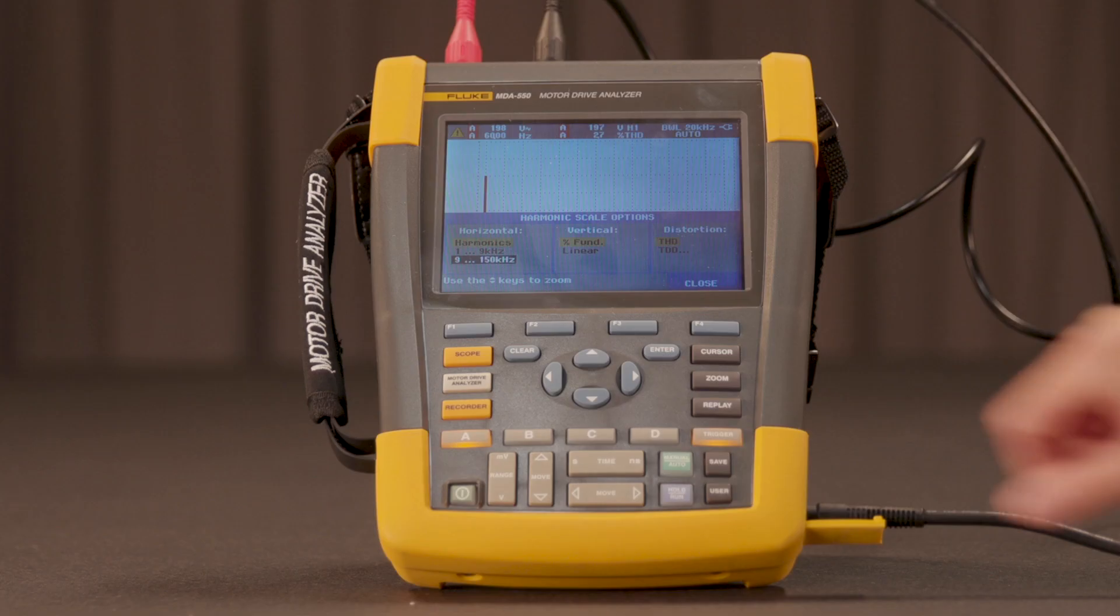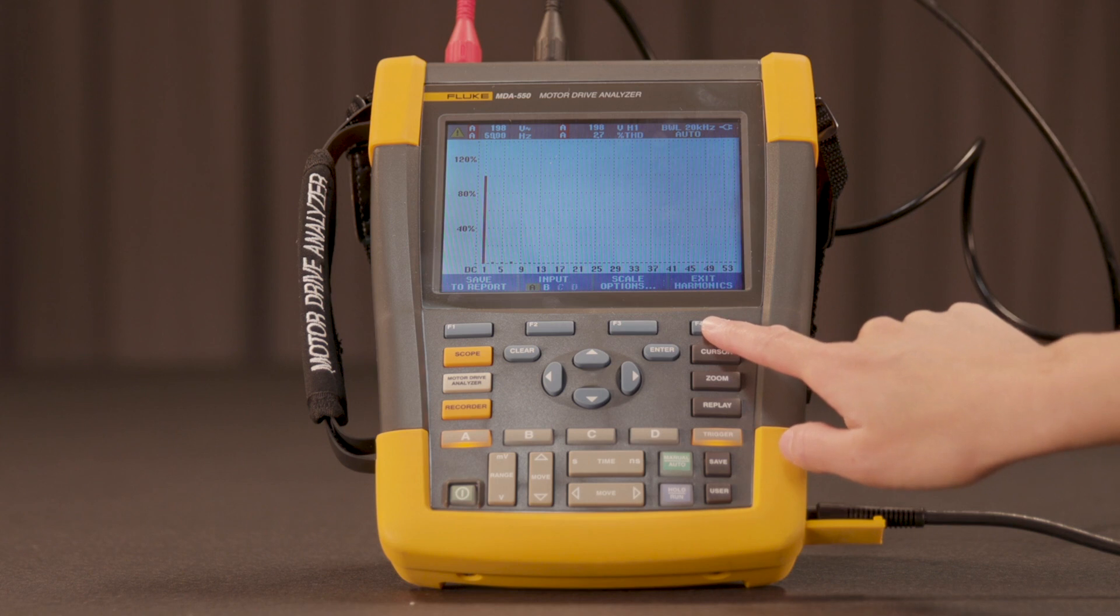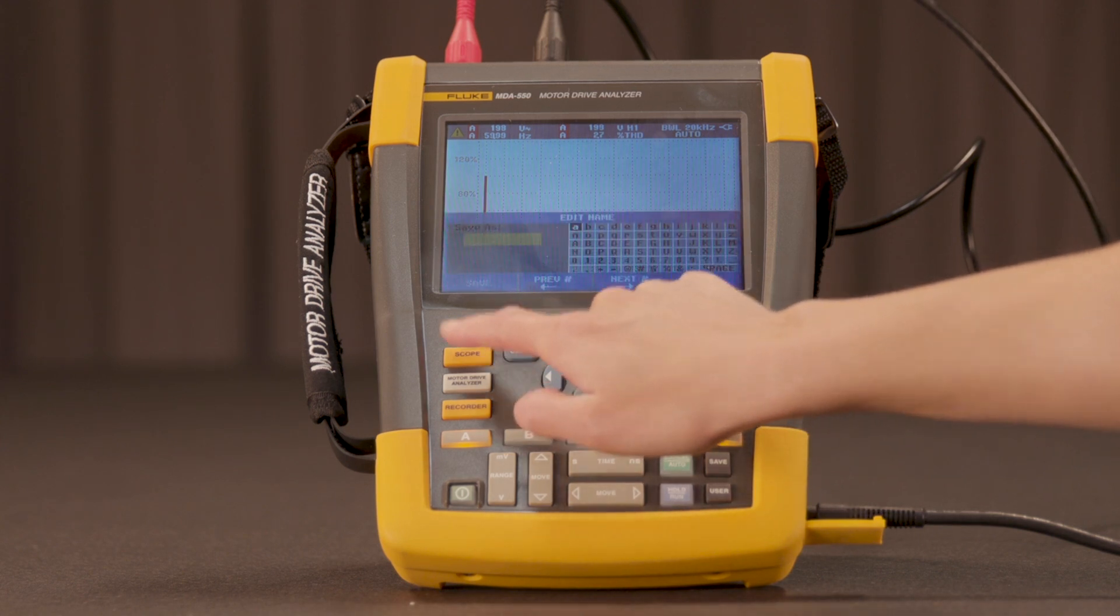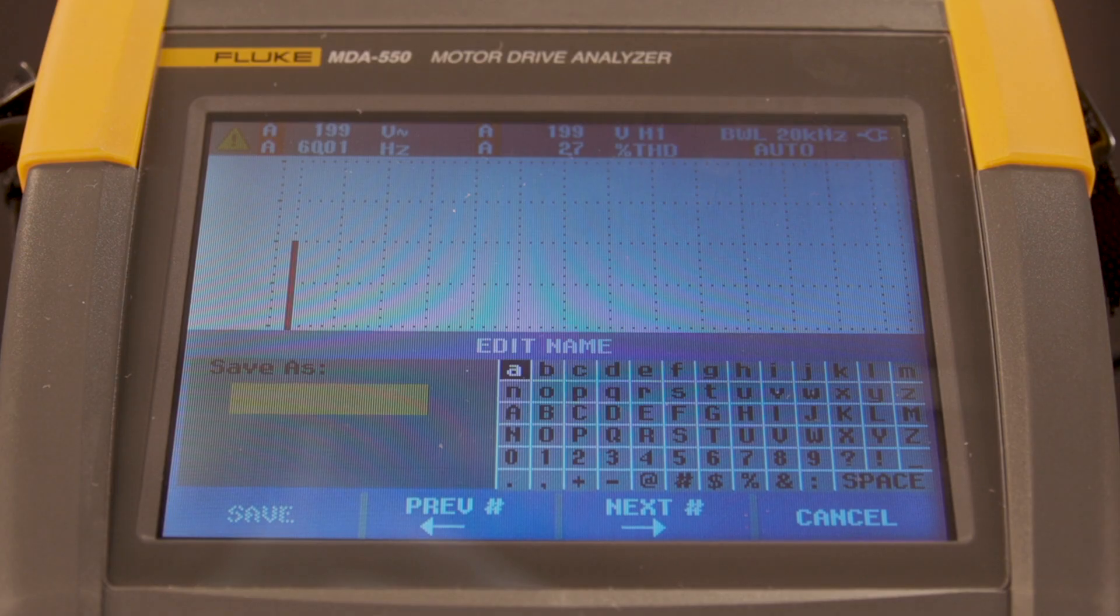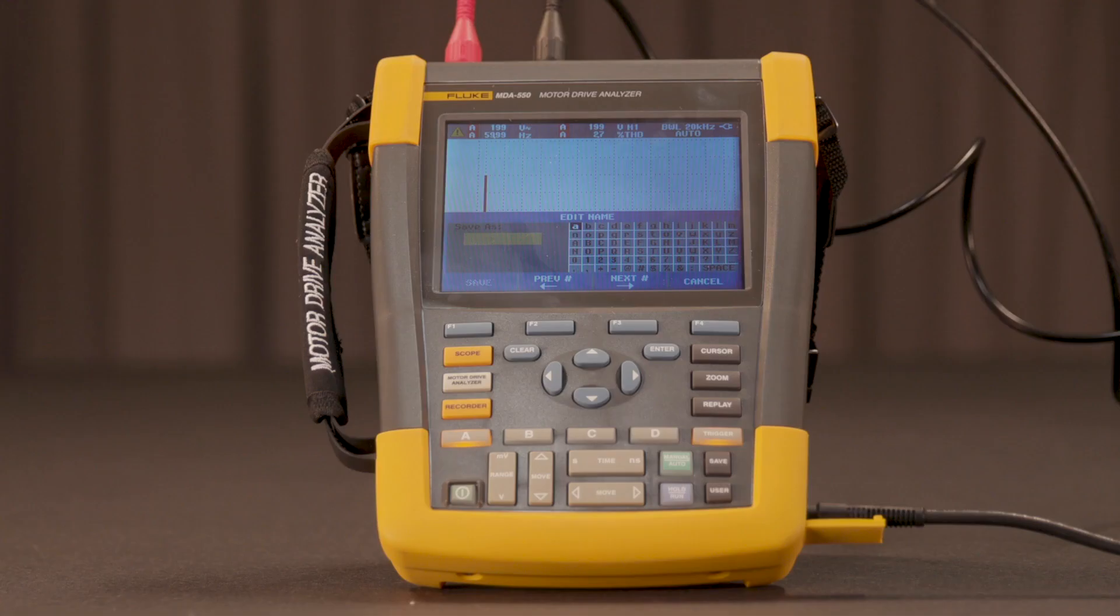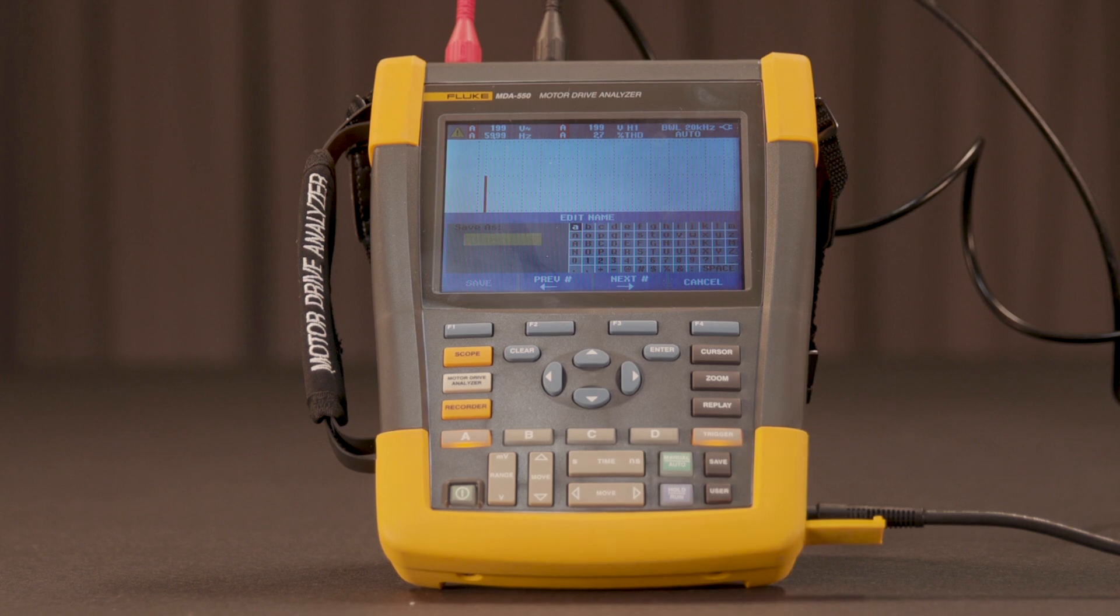Creating reports with the MDA is simple. Each measurement step includes a save to report option. The report can be transferred directly to a USB thumb drive, printed or sent to others who may be helping with the troubleshooting process.